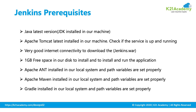The second prerequisite is: if you want to deploy applications on a web server or application server, then Apache Tomcat or IIS needs to be installed on your machine. You should also have good internet connectivity, and at least 1 GB of free disk space, because the jobs that run on Jenkins will be stored on your machine.